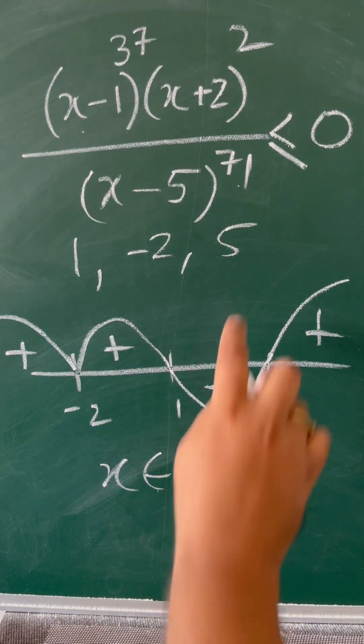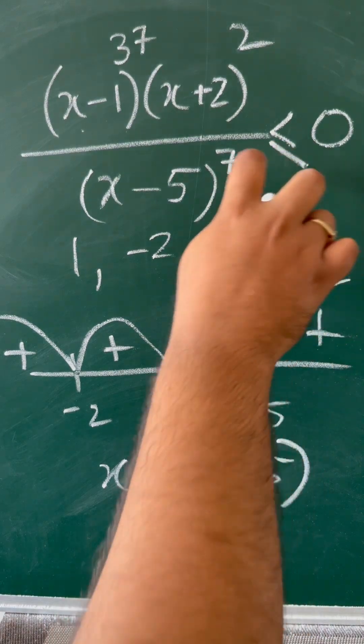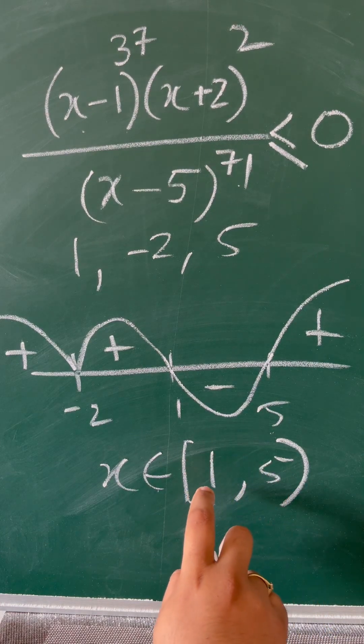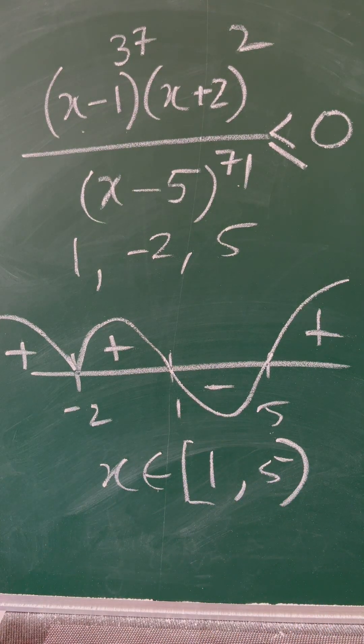This bracket includes 1 because the less than or equal to sign is here. So the answer is x lies between 1 to 5, with 5 not included and 1 included. If you like the video, do subscribe to our channel. Thanks for watching.